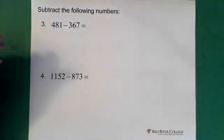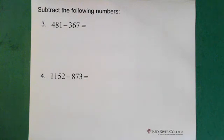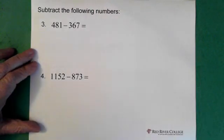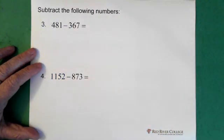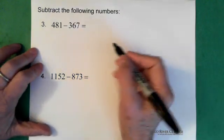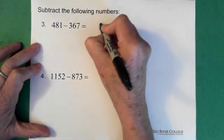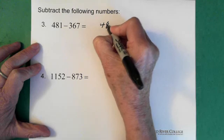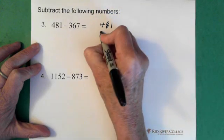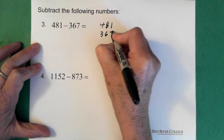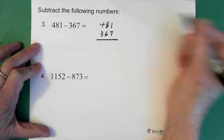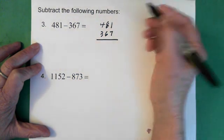Now if you want, you can pause the video and try these questions, and then just restart it and I'll walk through them. Alright. 481 minus 367. So we have 481 minus 367.